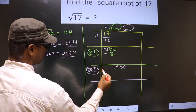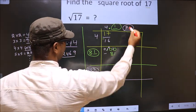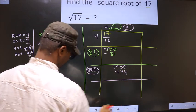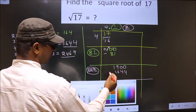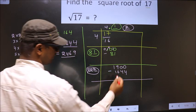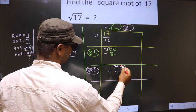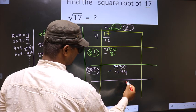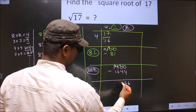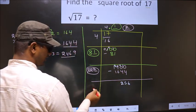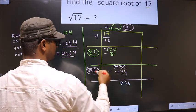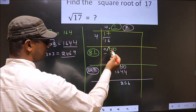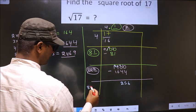So we take 2 here and 2 here, and write 1644 here. Now subtract: 10 minus 4 is 6, 9 minus 4 is 5, 8 minus 6 is 2 — giving remainder 256. Now add these two numbers: 822 plus 2 is 824.